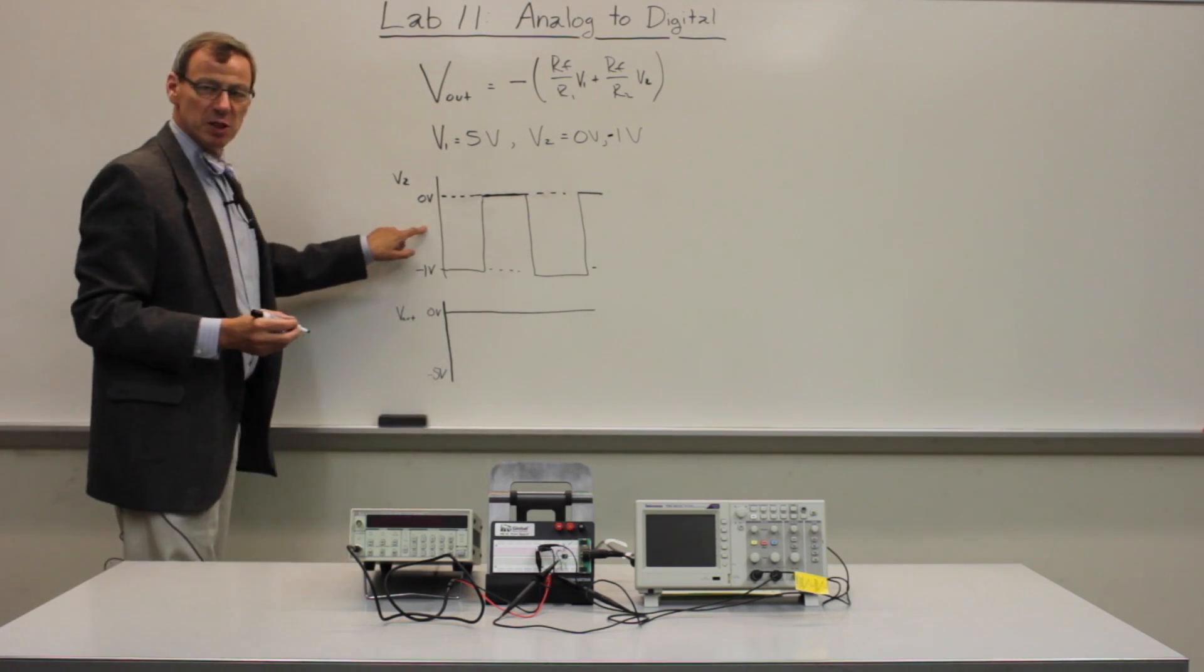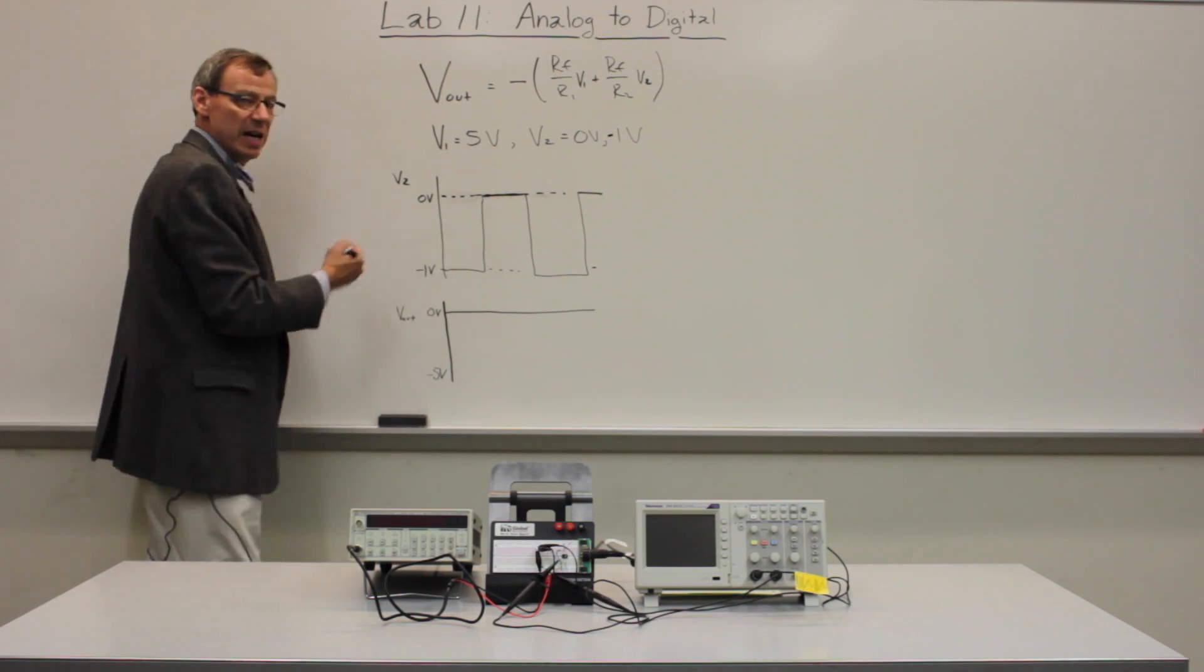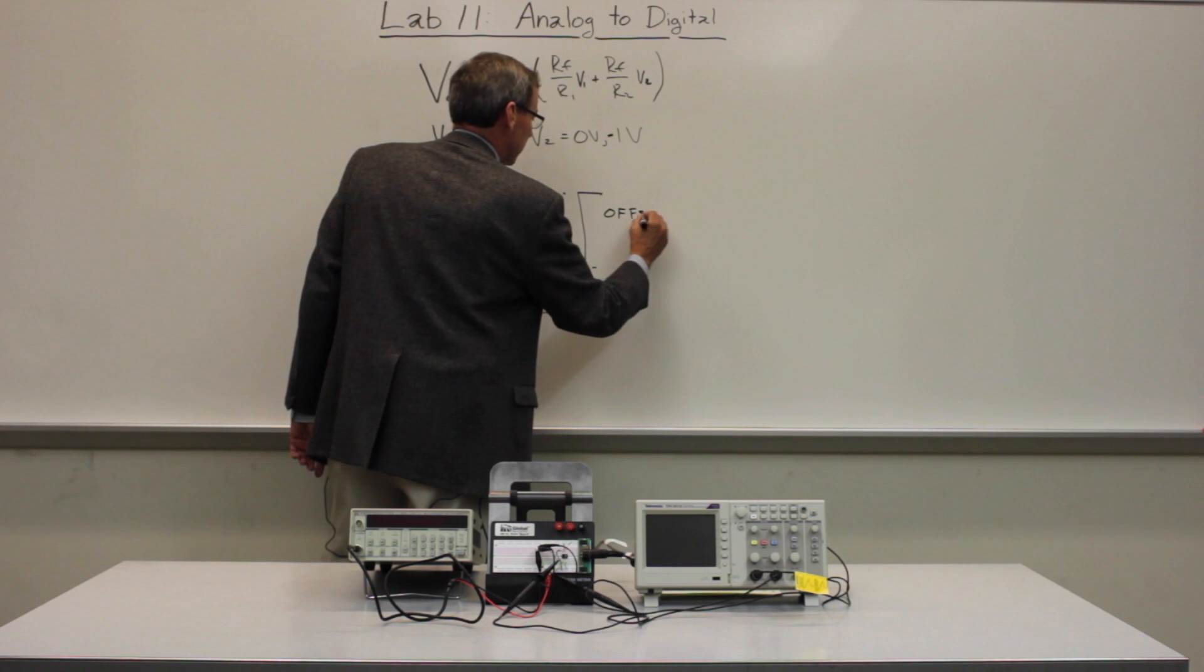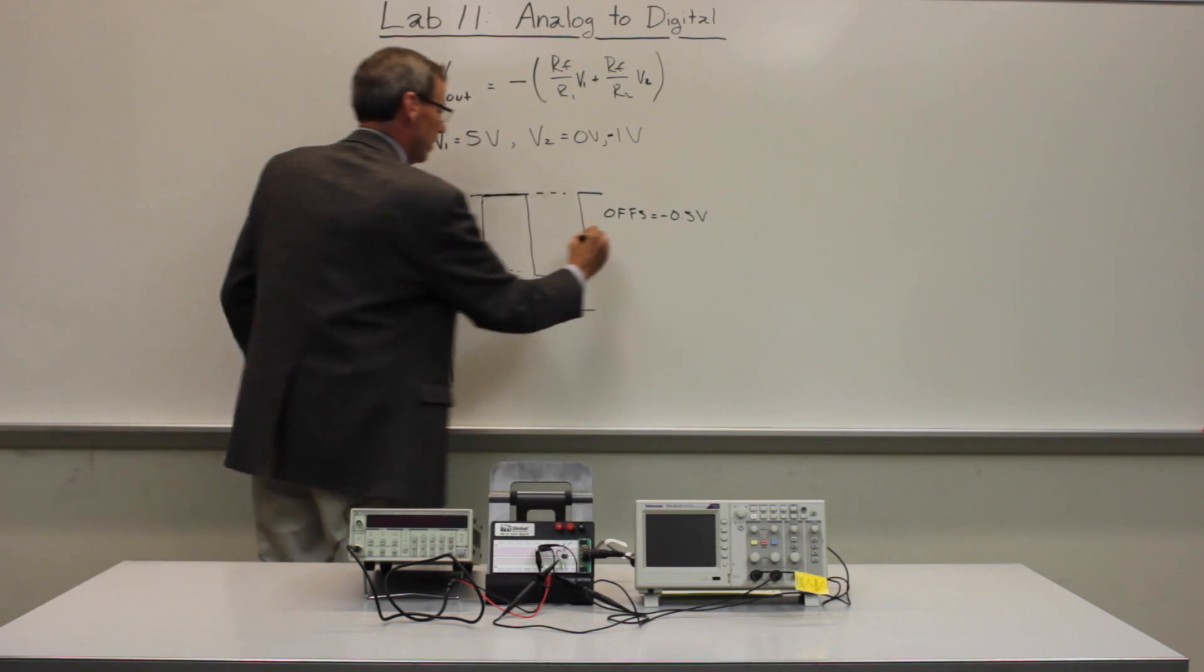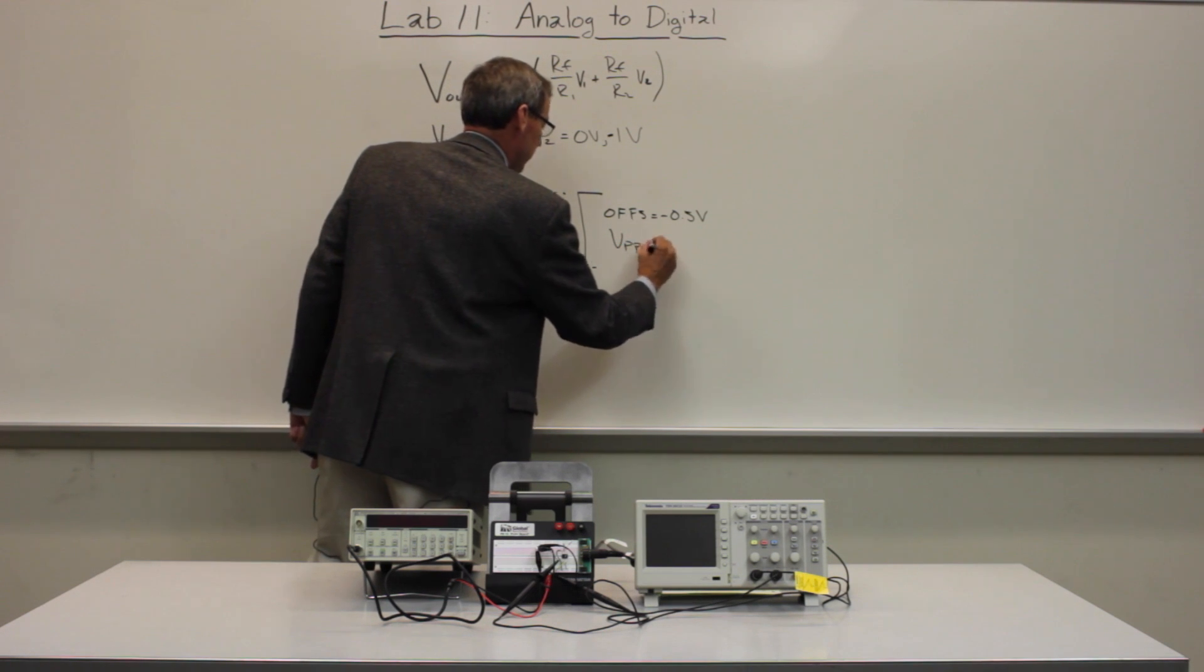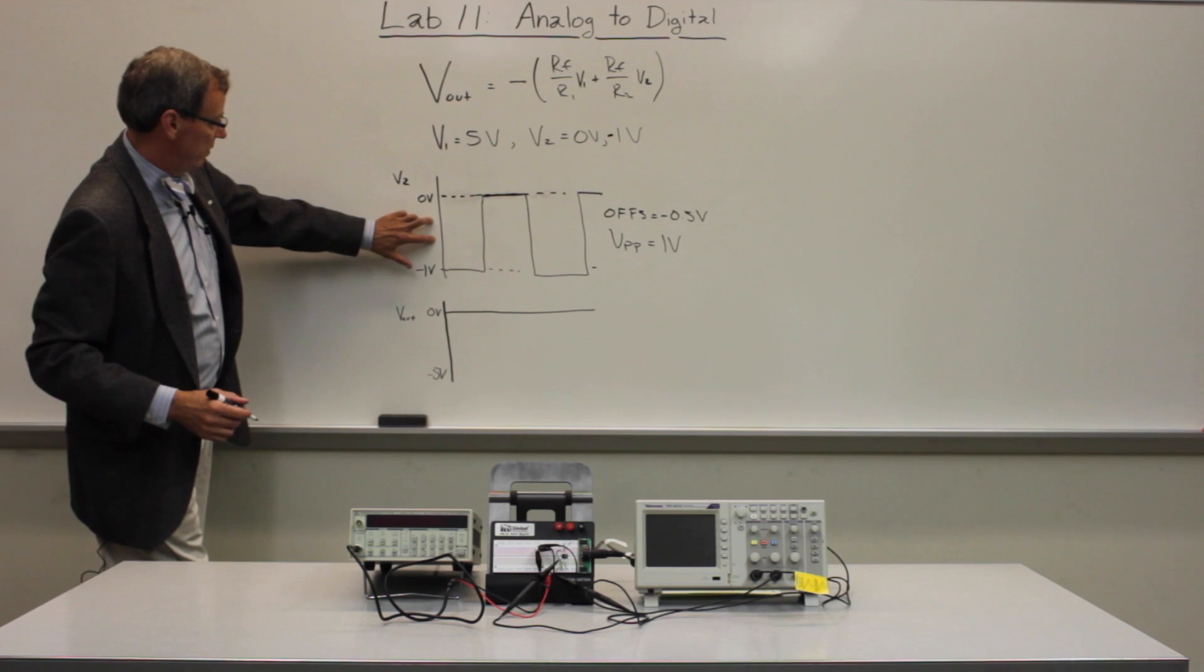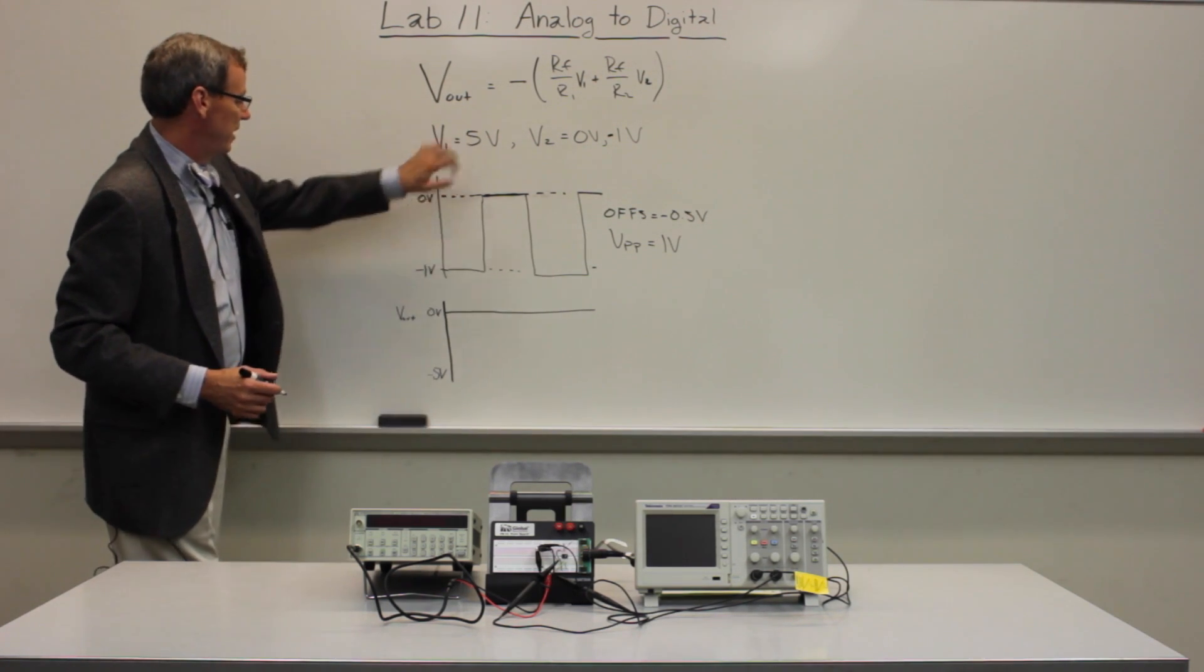We're going to do that with a square wave on our function generator. So we'll set it up to be 0 to minus 1. And remember the way we do this is we set the offset, OFFS, to be minus 0.5 volts, and we set VPP to be 1 volt. And then we get a signal that looks like this if we set up a square wave. That's the input here.